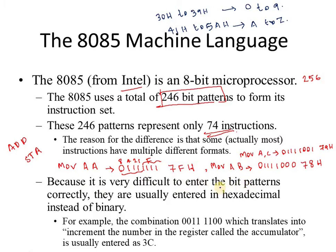Because it is very difficult to enter bit patterns correctly in binary, they are usually entered in hexadecimal instead. For example, the binary combination 00111100 — which means increment the number in the accumulator — is called increment accumulator.